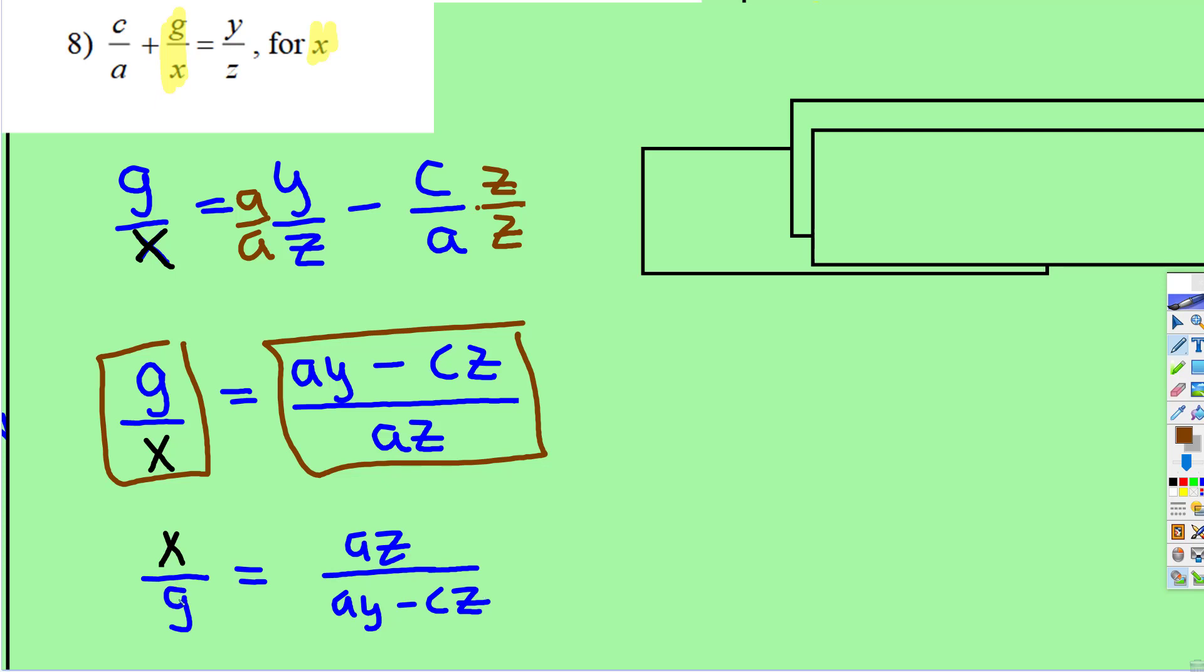And now all we're going to do, we need to get the x by itself. So we're going to multiply both sides by g, and when we do that, we will have x is equal to azg all over ay subtract cz. So not a lot of steps, you just have to be careful that you're paying attention with each piece, and that's it.